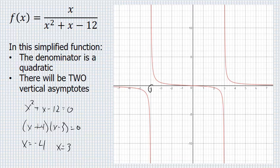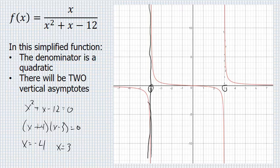On the graph, x equals negative 4, this vertical line is a line that sets a boundary on the graph. The graph never gets to x equals negative 4. It will get closer and closer to it from each side, but never touch it. There's another vertical asymptote at x equals 3.